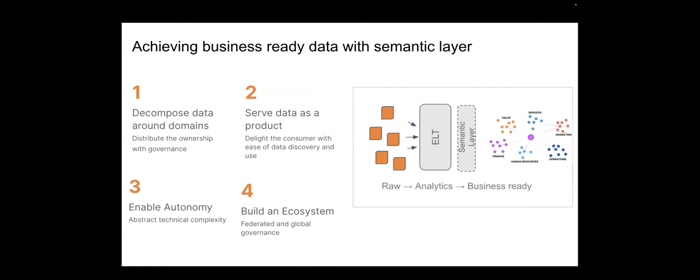Why do I keep saying that achieving business-ready data requires having a semantic layer? When you think about having business-ready data that truly enables the data mesh concept — which is all about enabling business units and business owners with the creation of data products — there are four criteria that you need to pay attention to. The first one is decomposing data around domains. When I say domain, I mean business units or business domains, such as different lines of business like finance, human resources, operations, or sales. Data mesh is really distributing the ownership of data with governance to those business units and creating data domains.